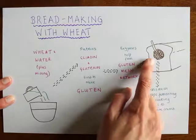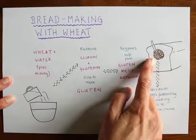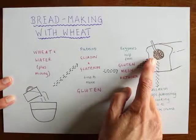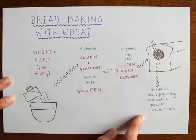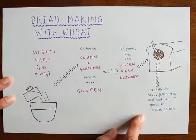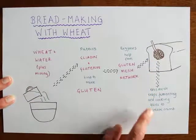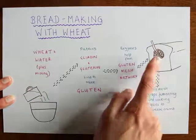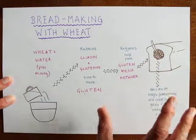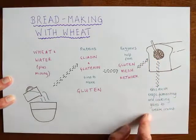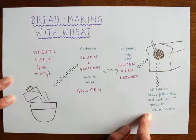And that kind of looks like this — it's like a mesh inside your bread. When your bread is fermenting, the gases that are released are trapped inside this network and they expand. And that's how you create the crumb in a wheat bread.